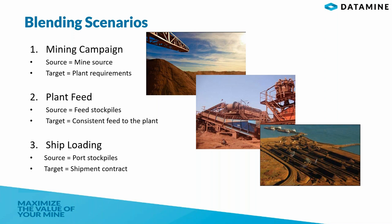Scenario number two is plant feed. The plant is built to perform most optimally under a certain set of constraints or parameters, and on a daily basis what needs to go through the plant is dictated by what needs to be produced. The question here is: what is the best blend from the feed stockpile to give us the optimal feed to the plant? Lastly, scenario number three is ship loading. Let's say we need to load a ship today — at the port stockyard is a set of stockpiles at various tons and qualities. Which stockpile should we use to load the ship?